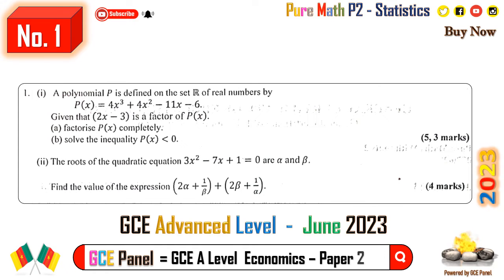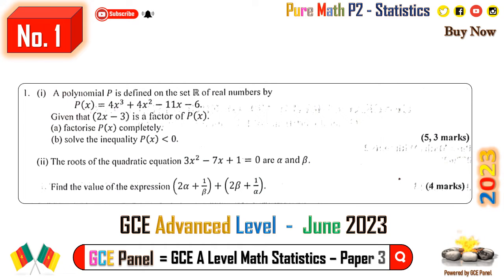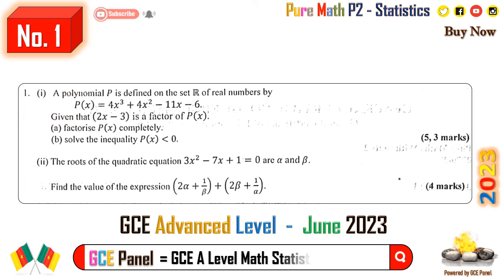Question one: a polynomial p is defined on the set of real numbers by p(x) equals 4x cubed plus 4x squared minus 11x minus 6. Given that 2x minus 3 is a factor of p(x), (a) factorize p(x) completely, (b) solve the inequality p(x) is less than zero.